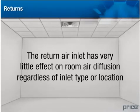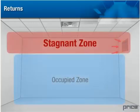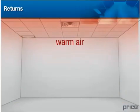The return air inlet has very little effect on room air diffusion, regardless of inlet type or location. However, return air inlets should be located a sufficient distance from the supply outlet so that short circuiting of supply air does not occur. It may also be desirable to locate the returns in the stagnant zone to remove unwanted warm or cool air. For cooling, a high sidewall or ceiling return will remove warm air from the space.